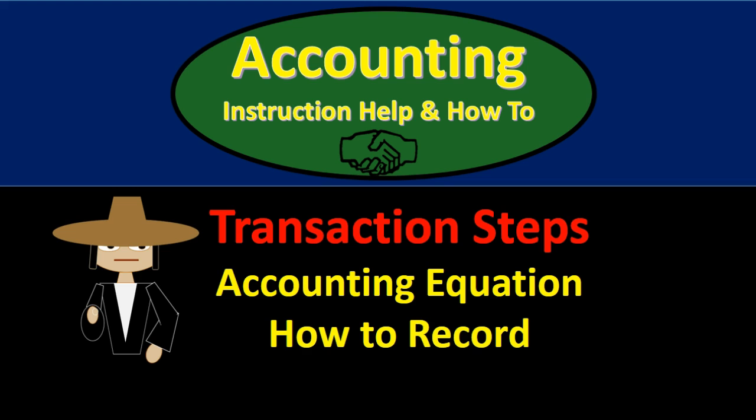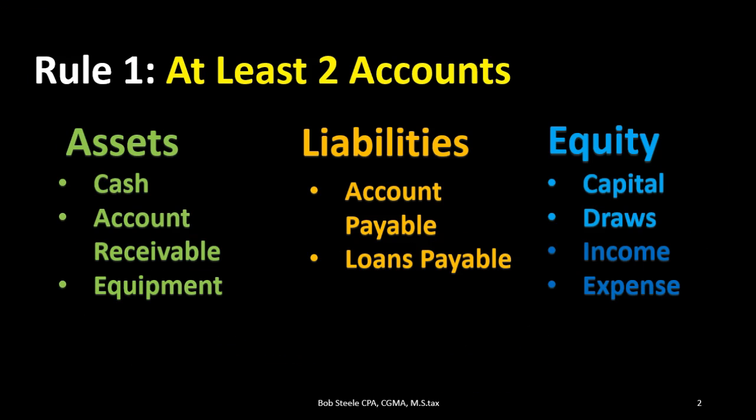This is a type of transaction where it's possible to learn rules that apply sometimes but don't apply all the time. If we learn rules like that, we have to unlearn those rules. We really want to avoid learning rules that don't apply all the time. If we go through a systematic set of steps we will avoid that. Also note that when we get to debits and credits we're just going to build on this system of rules as we move from the accounting equation to debits and credits.